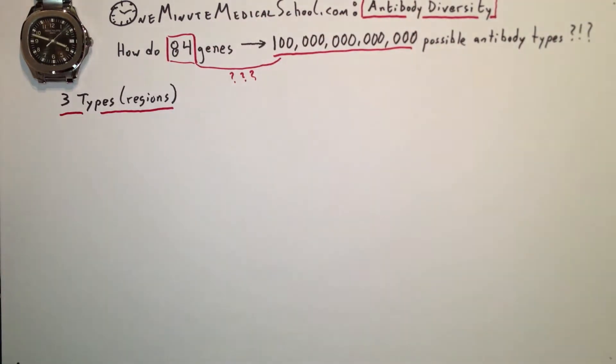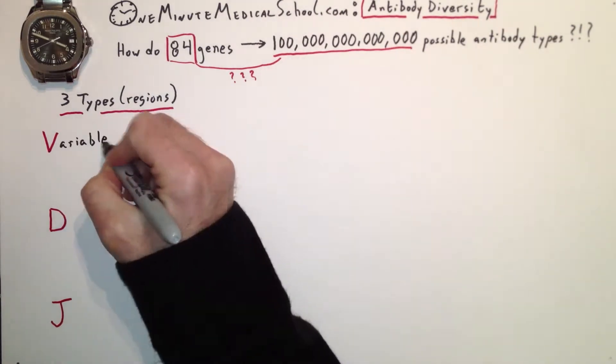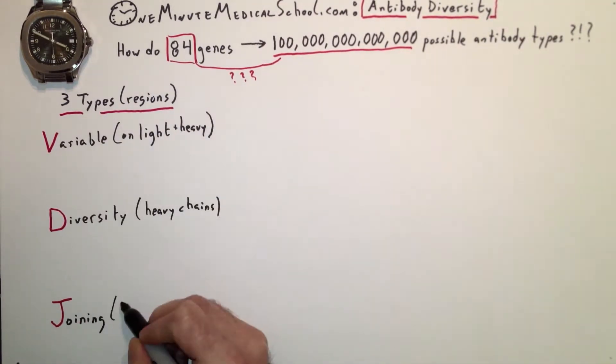You have three kinds of genes that make antibodies: V, D, and J, for variable, diversity, and joining.